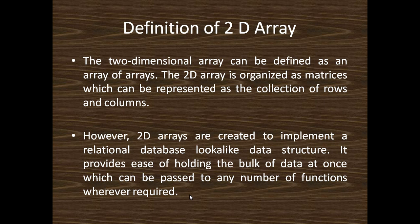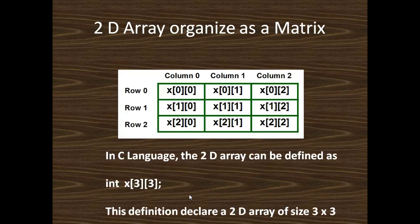We can use the two-dimensional array to represent any table where any number of rows and columns can be implemented. Actually, a 2D array is nothing but a matrix. This is a 3x3 matrix with row 0, row 1, row 2, and column 0, column 1, column 2.